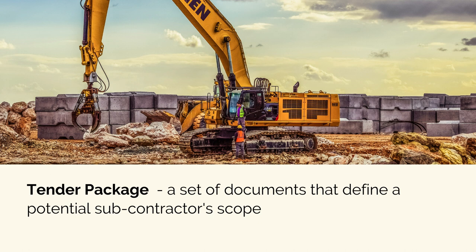This set of documents is called a tender package, and it needs to spell out the exact scope and responsibilities to be completed by a potential subcontractor. For a minor subcontract, a tender package may only be a short scope of works, some drawings, and a draft form of contract. For a major $100 million subcontract, a tender package may contain hundreds of different documents, including specifications, multiple different design packages, project management plans, and more. The purpose is to define clearly and accurately what we require a subcontractor to do for us. The documents issued at tender will be the basis for their quote, and any changes that impact the subcontractor's scope may result in variations or disputes during project delivery, so we need to make sure we get the tender package correct.